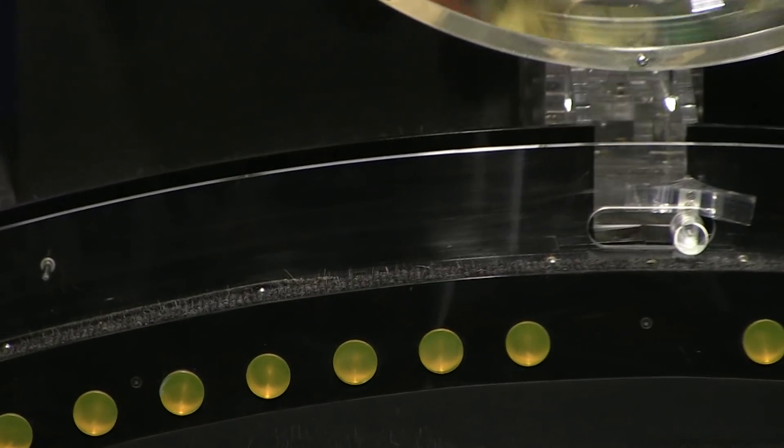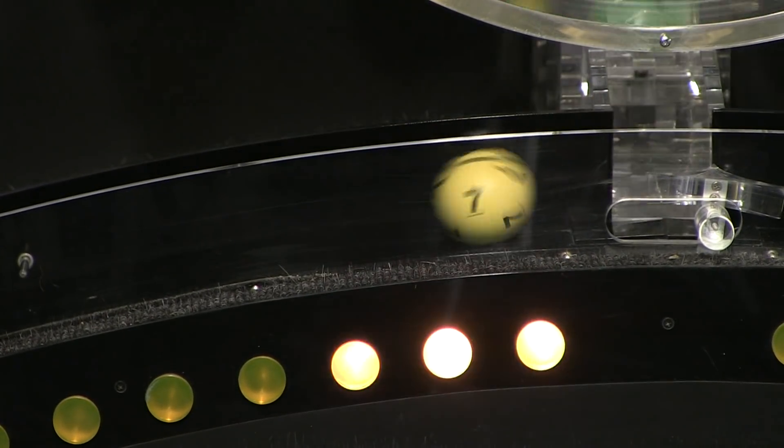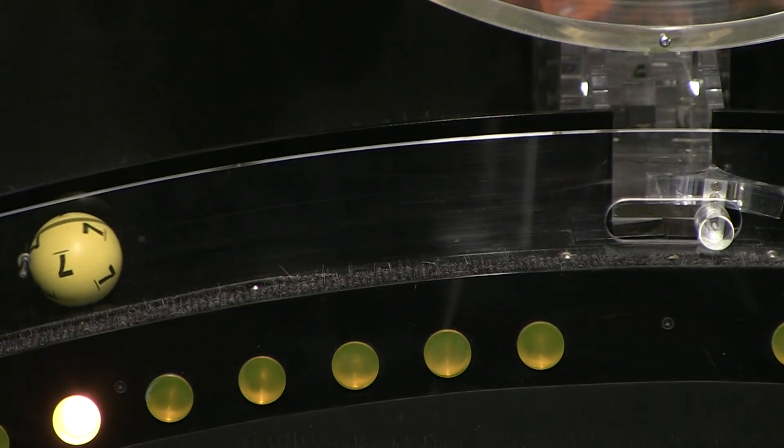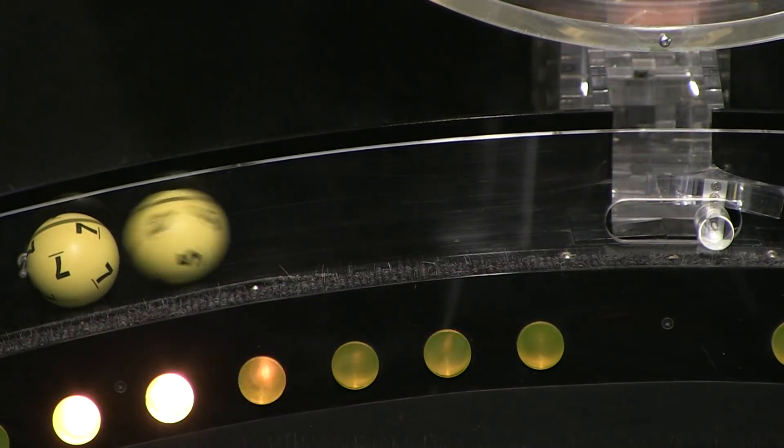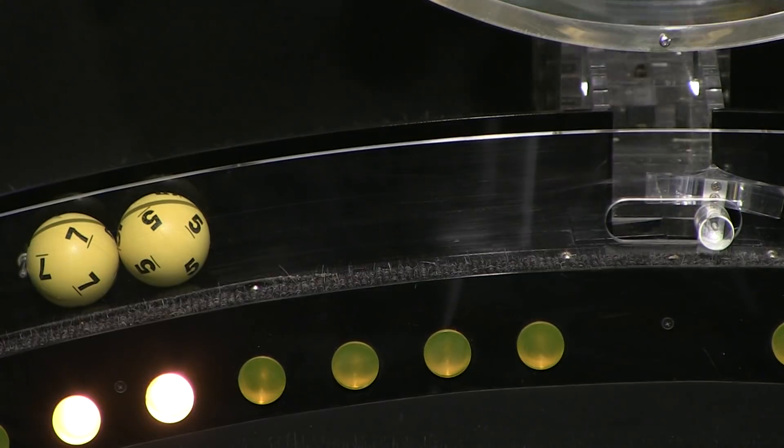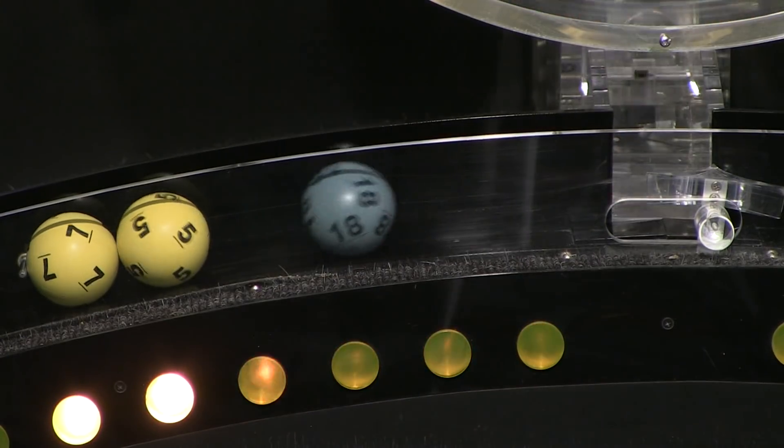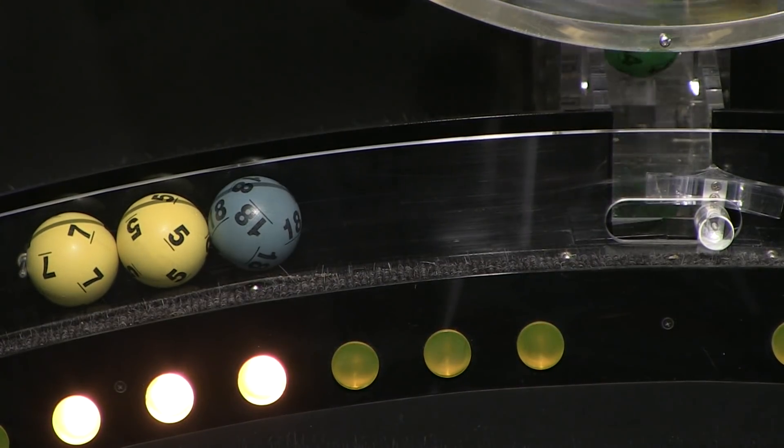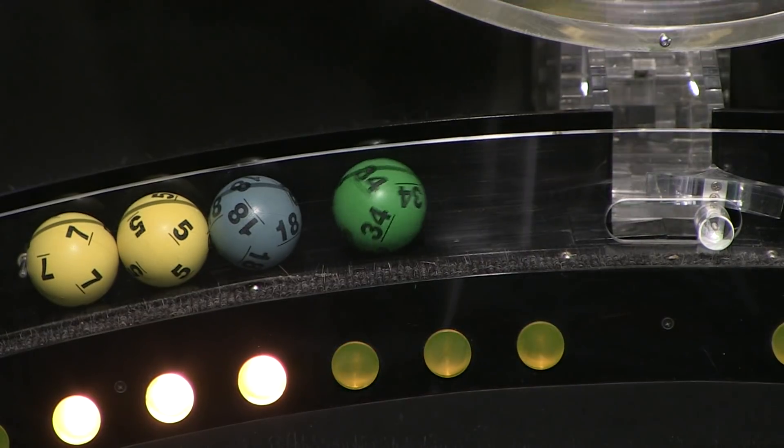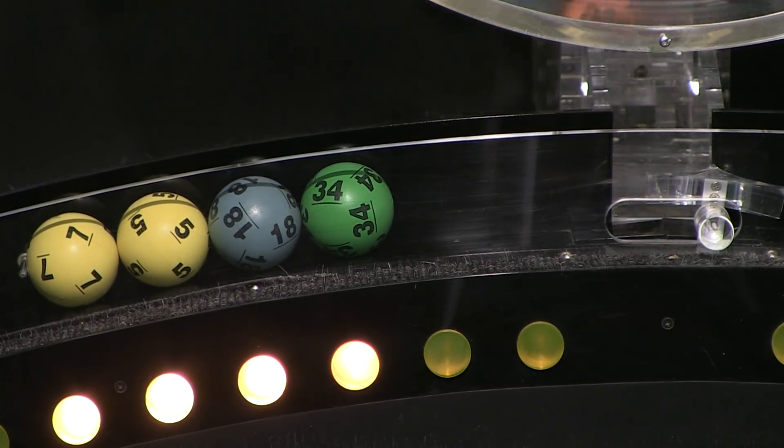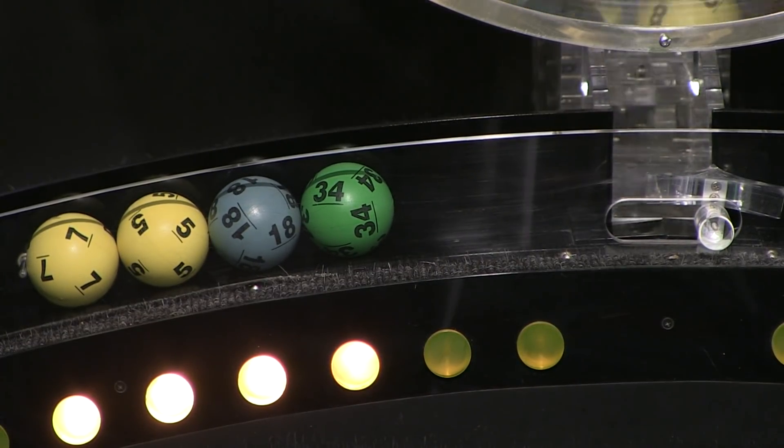Now let's see how you did in tonight's Mass Cash drawing. First number up is number seven, following that we have number five. Rolling right behind that is number 18, up next is 34, and the final ball in this sequence is...